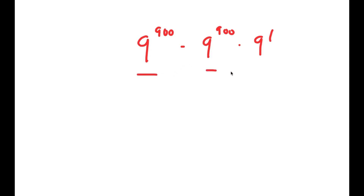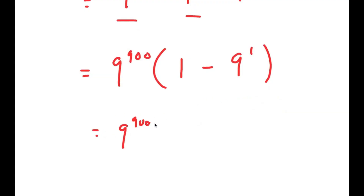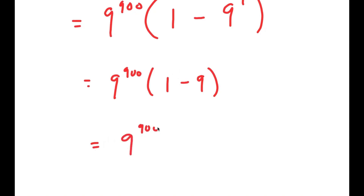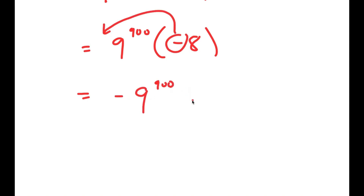Both terms contain 9 to the power of 900, so I factor that out to get 9 to the power of 900 times 1 minus 9 to the power of 1. Since 9 to the power of 1 equals 9, this is 9 to the power of 900 times 1 minus 9, which equals 9 to the power of 900 times negative 8. Moving the negative sign to the front gives negative 9 to the power of 900 times 8.